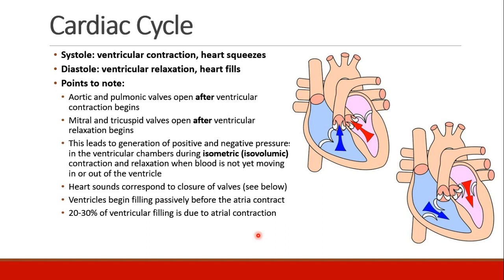The cardiac cycle is divided into two parts: systole and diastole. Systole is when the ventricles contract and the heart squeezes. Diastole is when the ventricle relaxes and the heart is able to fill with blood. The aortic and pulmonic valves open after ventricular contraction begins — first it contracts and builds up pressure, and then afterwards the valves open and blood begins to eject.